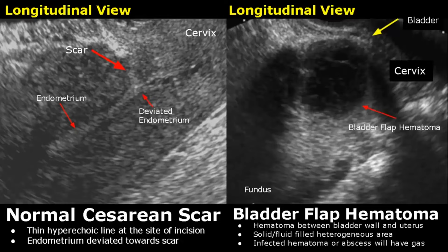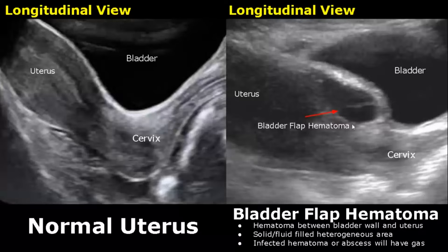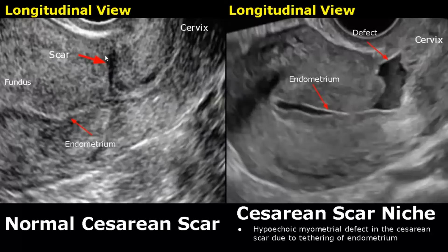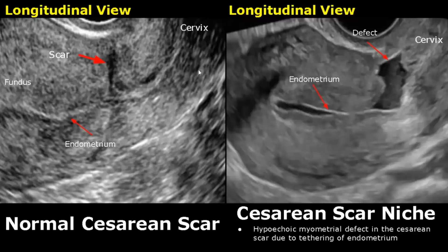Here is a transabdominal image of bladder flap hematoma between the bladder wall and the uterus. This is another image of a normal caesarean scar — a hypoechoic line in the myometrium. In a caesarean scar niche, there will be a hypoechoic defect in the myometrium at the site of the caesarean scar due to tethering of the endometrium, and blood has accumulated in this defect.